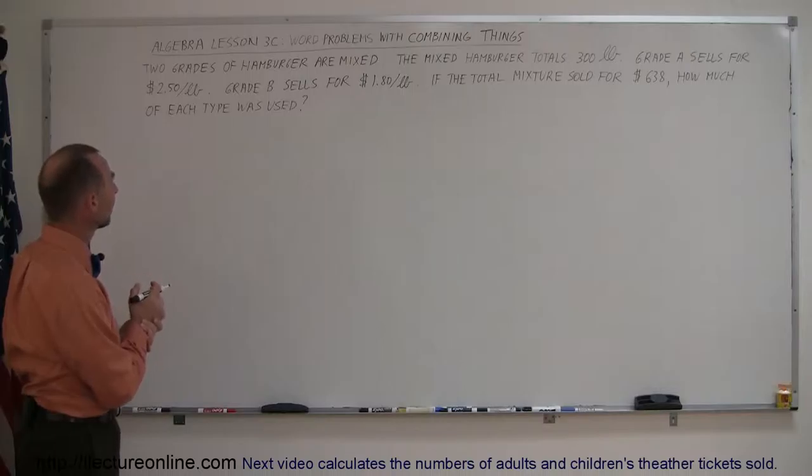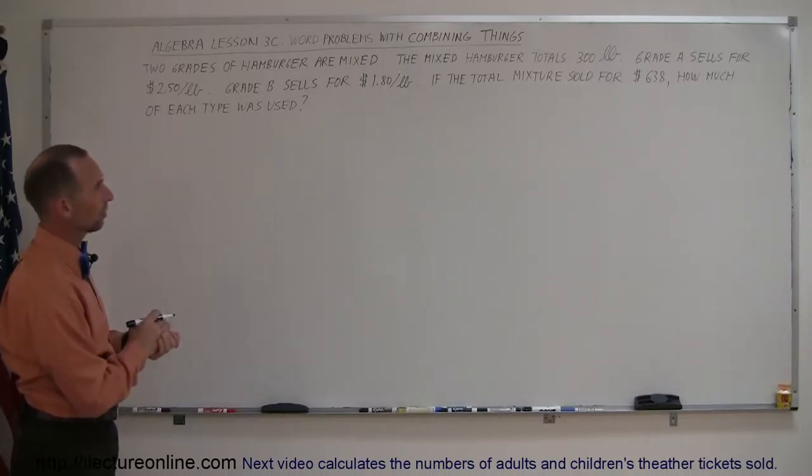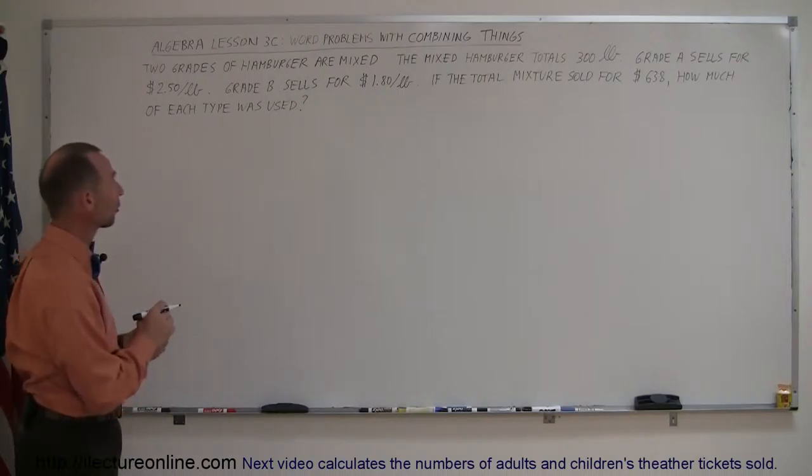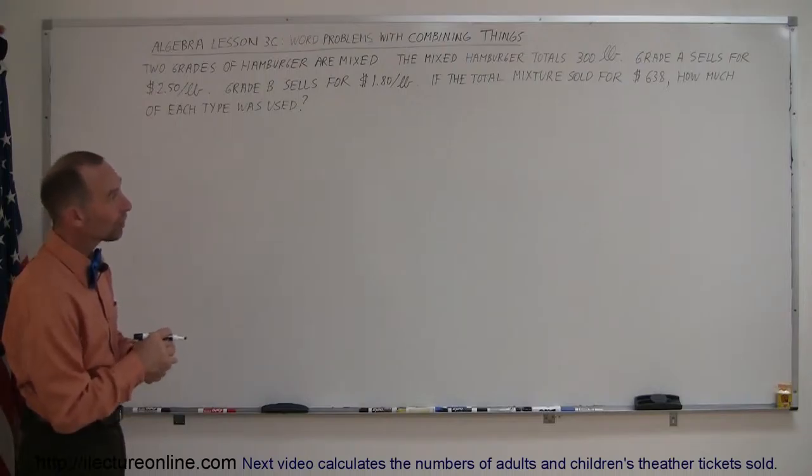Our first problem starts with two grades of hamburger are mixed. The mixed hamburger totals 300 pounds. Grade A sells for $2.50 a pound. Grade B sells for $1.80 a pound. If the total mixture sold for $638, how much of each type was used?